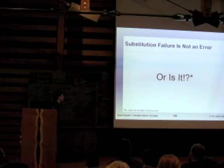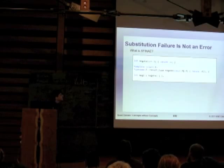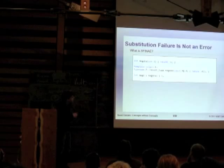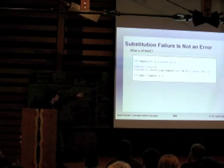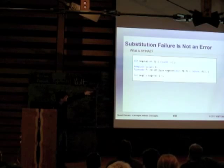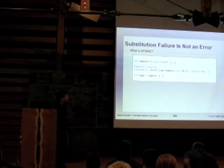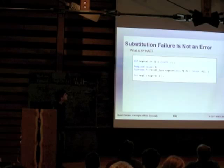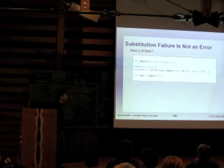So, substitution failure is not an error. I think most people are familiar with SFINAE. Essentially, when you're substituting your deduced template parameters, if you produce a type in either the return type or the parameter types that cannot be evaluated — for instance, typename F::result_type, if you try to call negate with an integer and substitute int for F — you don't want that to produce an error; you want it to just ignore that overload. So calling negate with the literal one picks the first overload with no error.